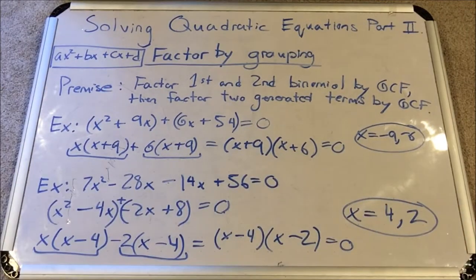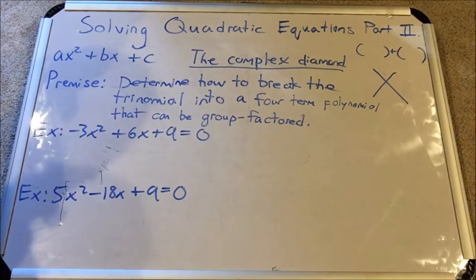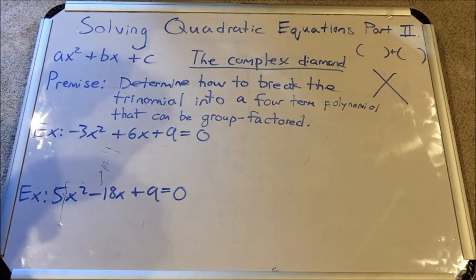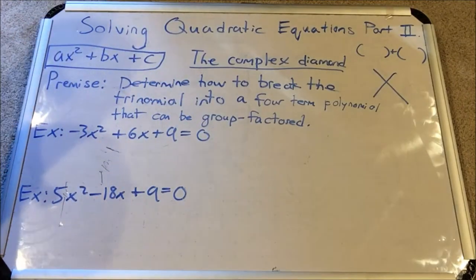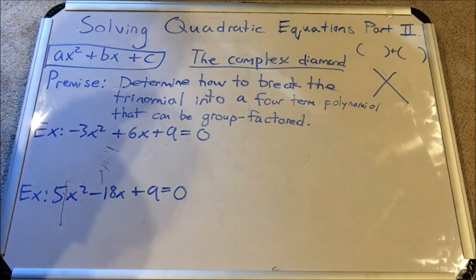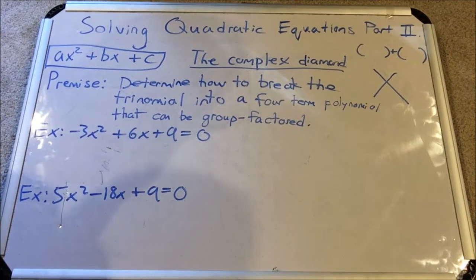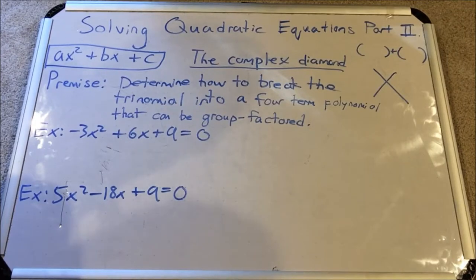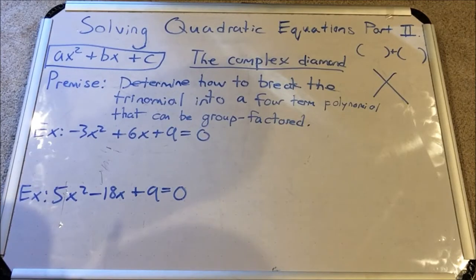That covers factoring by grouping. Now for the last factoring type in this video — the complex diamond, which is my name for it. It's used to solve quadratic equations of the form ax² + bx + c where a is greater than one (or not equal to one). The basic premise is to determine how to break up the trinomial into a four-term polynomial that can be group factored — specifically, how to split the middle term bx into two terms.